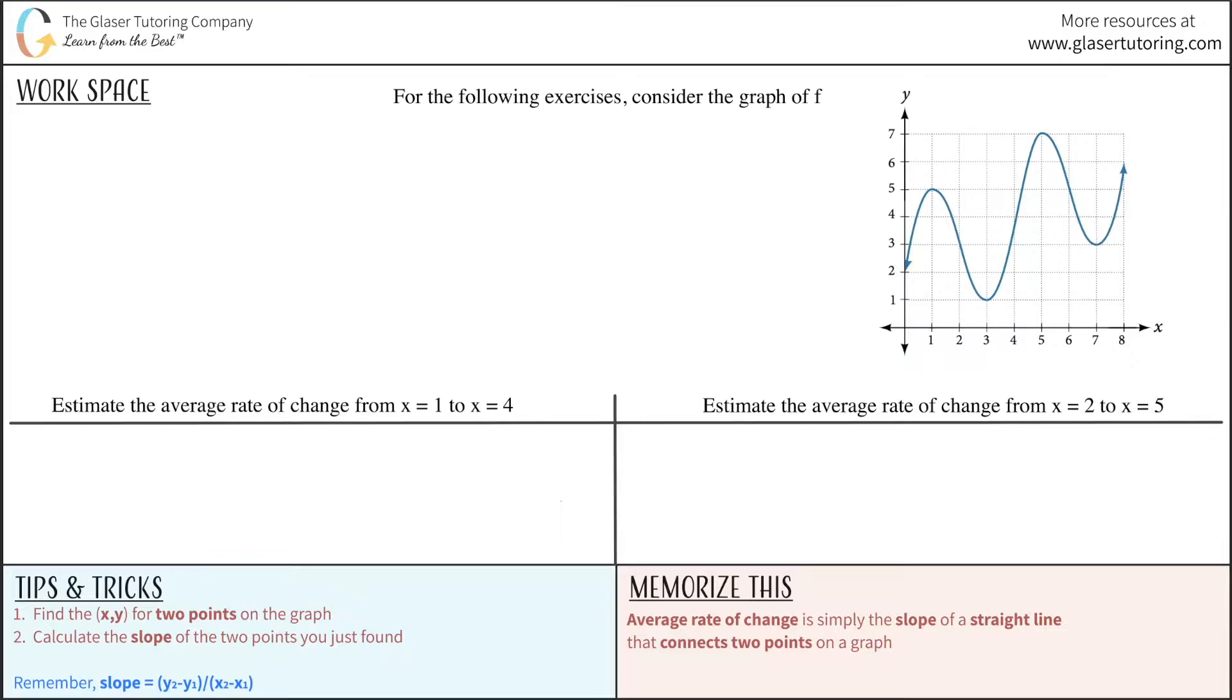For the following exercises, consider the graph of f on the right-hand side. So the first question says, estimate the average rate of change from x equals 1 to x equals 4.